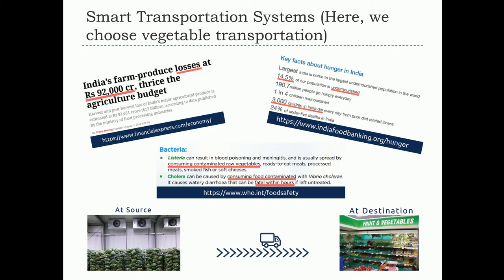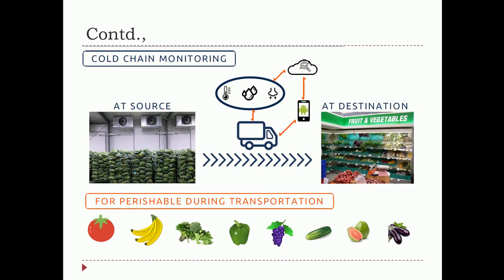Three thousand children in India die every day from poor diet and related illness — that is shocking. Everywhere there is a problem with the quality of vegetables and perishables that are transported. We found that IoT is going to help us determine the quality of perishables during transport.